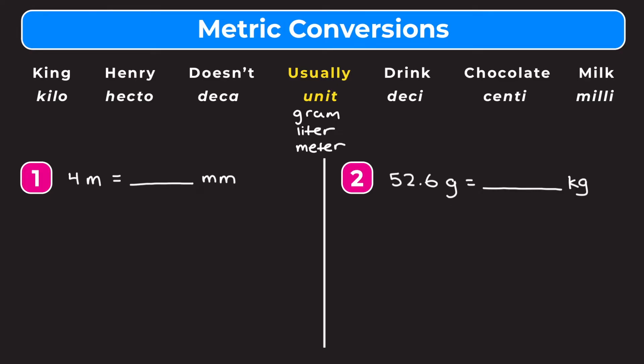I'm going to show you how we can use this chart when converting metric units. Typically in school we don't really deal with hecto, deca, and deci, so for this video we're just going to look at kilo, unit, centi, and milli, and convert between those different units.